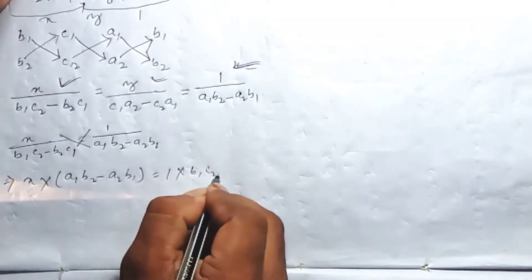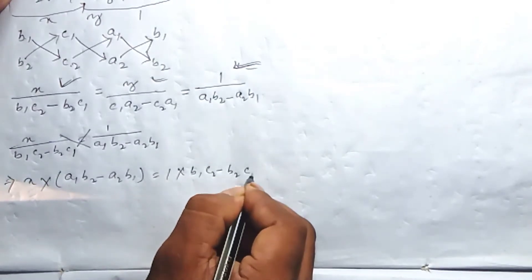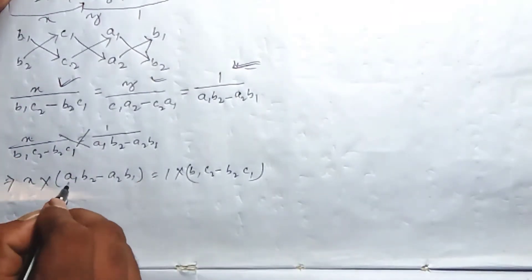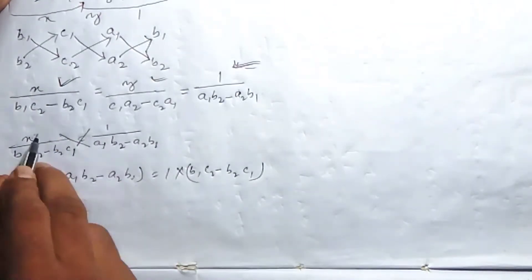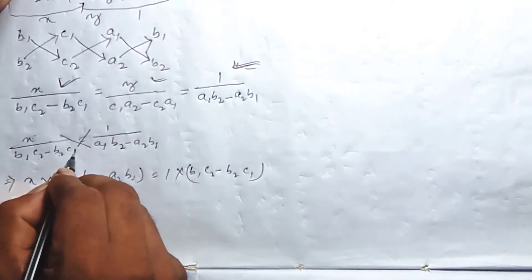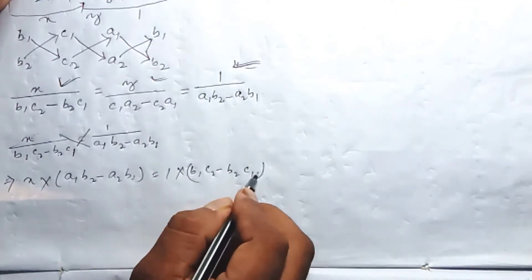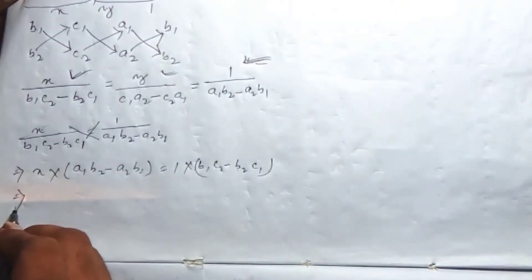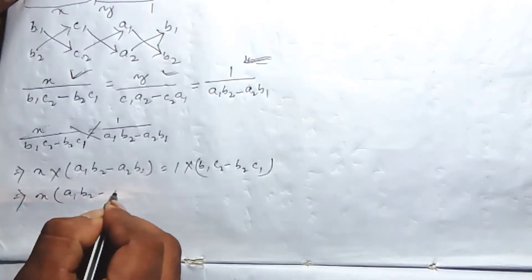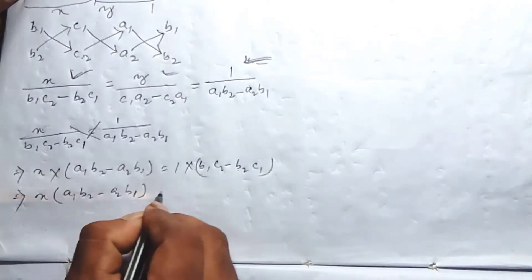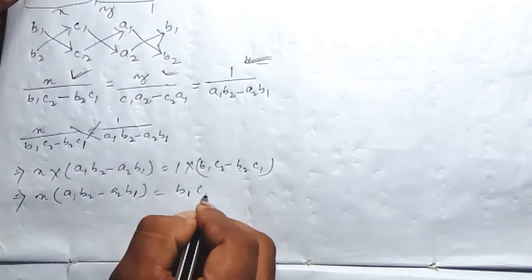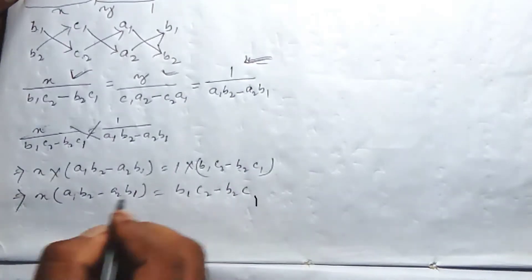So that gives us: b1 c2 minus b2 c1 equals x into a1 b2 minus a2 b1. Therefore X equals b1 c2 minus b2 c1 divided by a1 b2 minus a2 b1. This is the value of X from the cross-multiplication.